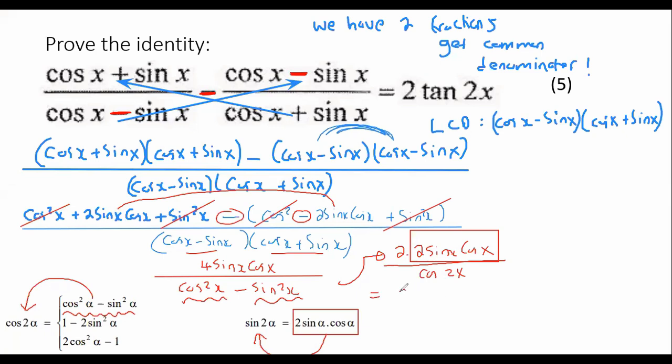And so what we're going to end up with is 2 sin of 2x over the cos of 2x. Now, the sin of 2x divided by the cos of 2x is obviously just going to be the tan of 2x. And so the final answer will be 2 tan 2x. And so therefore, the left-hand side is the same as the right-hand side.